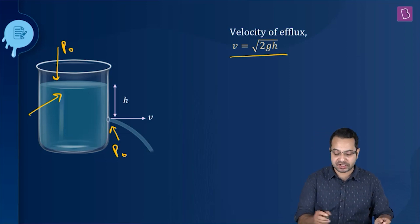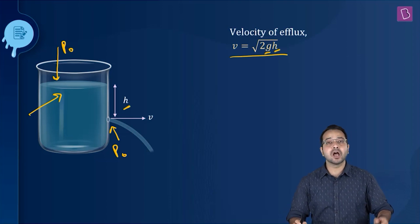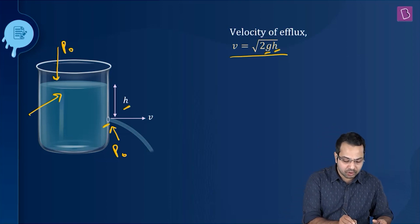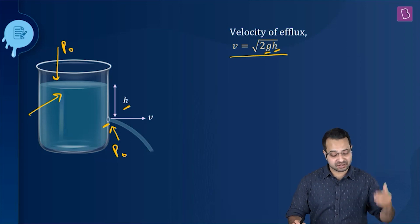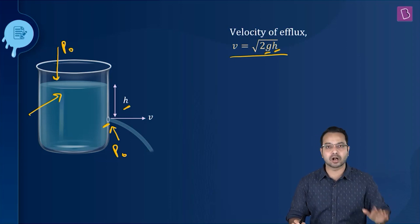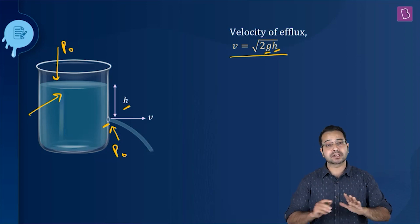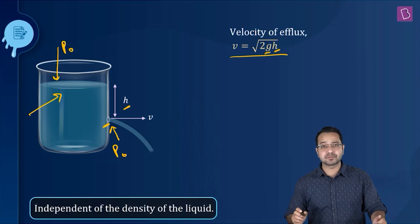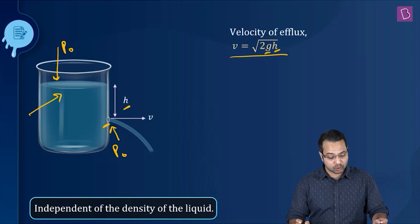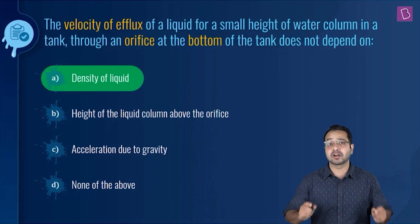So naturally the velocity is going to depend on the acceleration due to gravity and on h, which is the height of the liquid column above the orifice. But be very careful: if the pressure at the surface and at the orifice is not the same, and the area of the orifice is not small, Torricelli's law will not be applicable and we will have to find speed of efflux using Bernoulli's equation. Since these assumptions are valid, the speed of efflux is independent of the density of the liquid, and hence option A is the correct option.